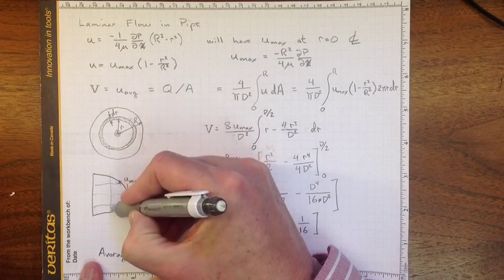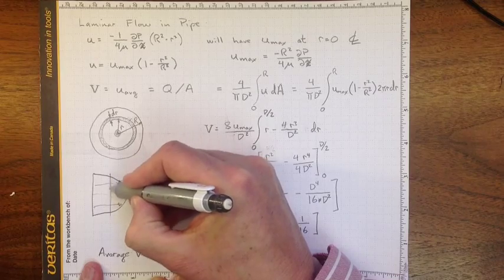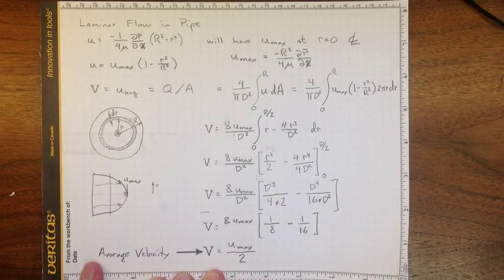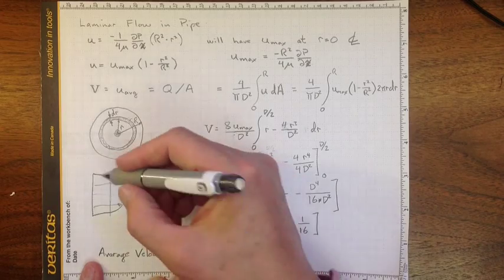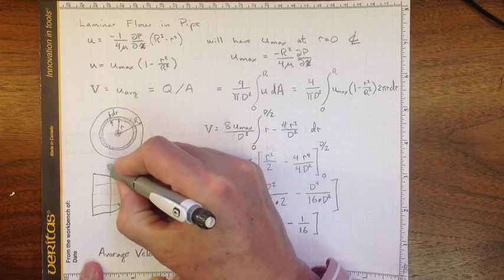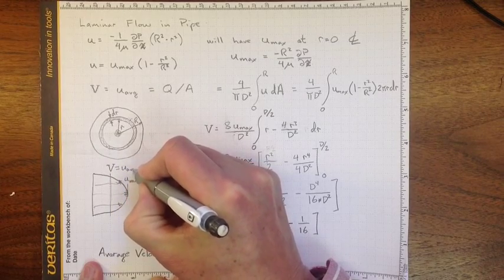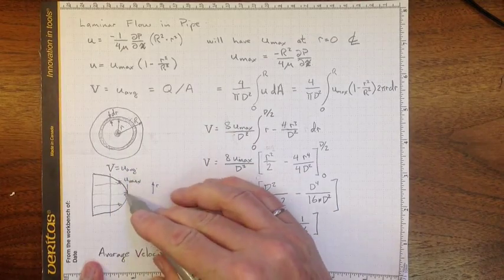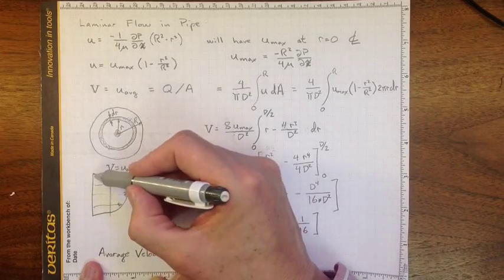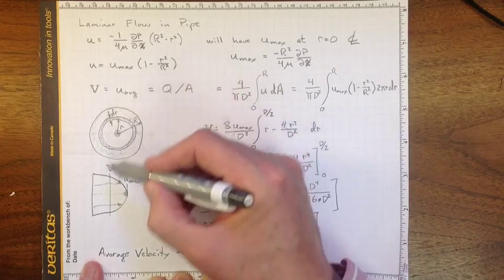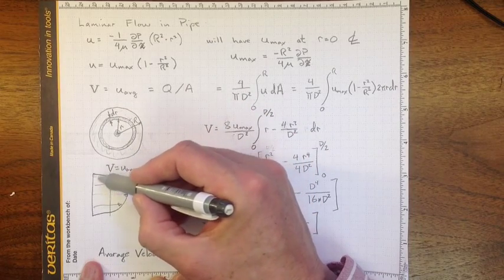So although that doesn't look like it's the average, it winds up being the average over the entire cross section. So the average velocity is one half the maximum velocity. That's because so much larger a region out here,